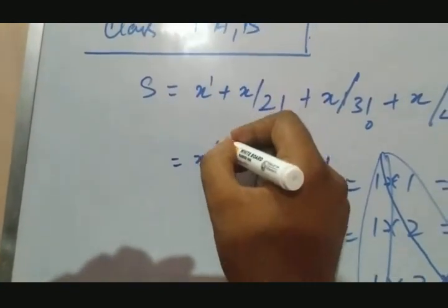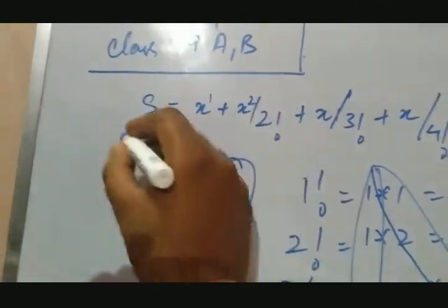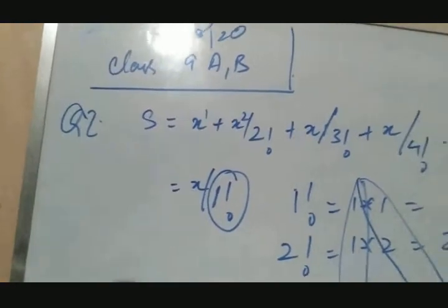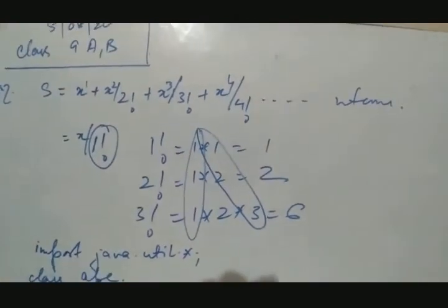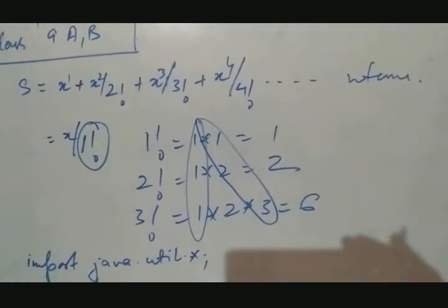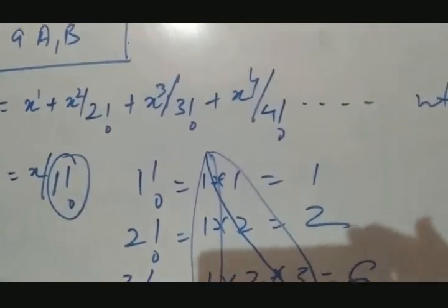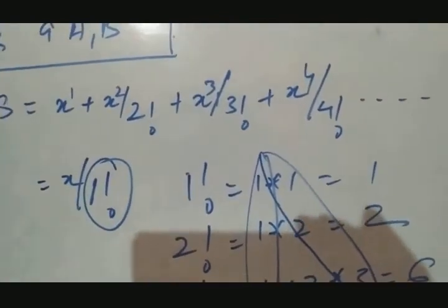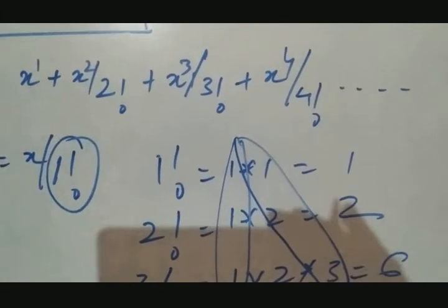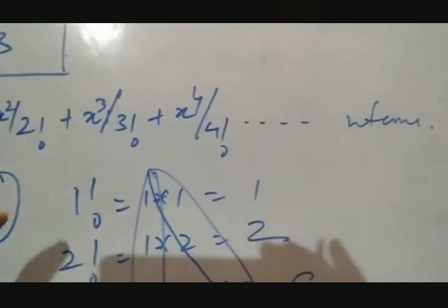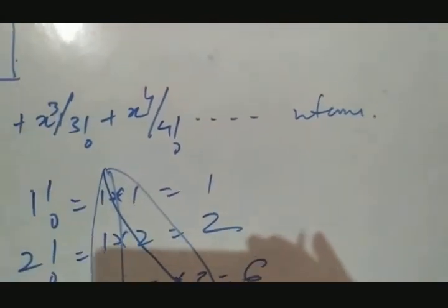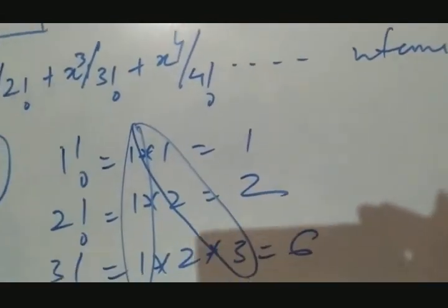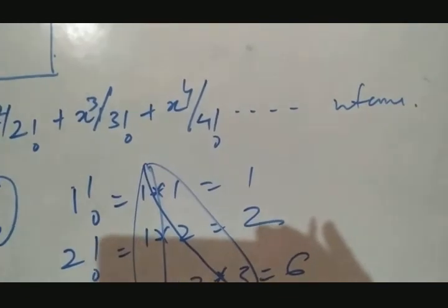This is question number 2. S equals to x to the power 1 upon 1 factorial plus x to the power 2 upon 2 factorial plus x to the power 3 upon 3 factorial plus x to the power 4 upon 4 factorial dot dot dot n terms. So when the question is asked, look at now. The factorial portion is my loop. Now what is in the denominator, that same thing has been powered up in the numerator. What has been in the denominator, that same thing has been powered up. So begins in the same way.